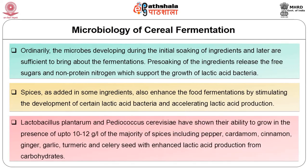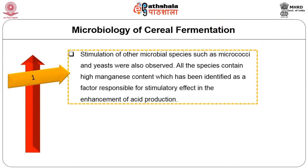Lactobacillus plantarum and Pediococcus cerevisiae have shown their ability to grow in the presence of up to 10 to 12 grams per litre of the majority of spices including pepper, cardamom, cinnamon, ginger, garlic, turmeric and celery seed, with enhanced lactic acid production from carbohydrates. Stimulation of other microbial species such as micrococci and yeast were also observed. All these species contain high manganese content, which has been identified as the factor responsible for the stimulatory effect in the enhancement of acid production.